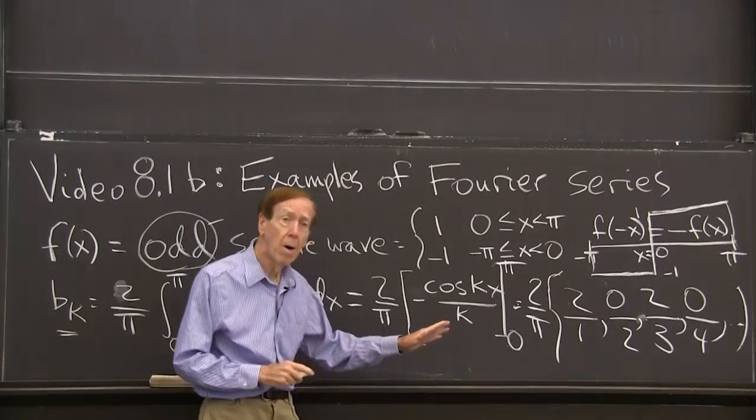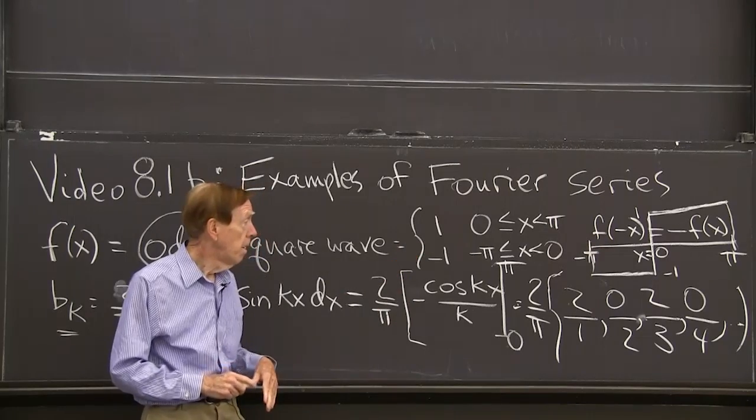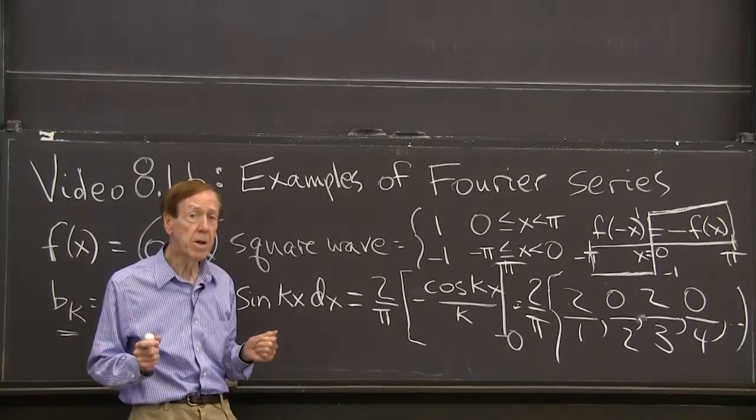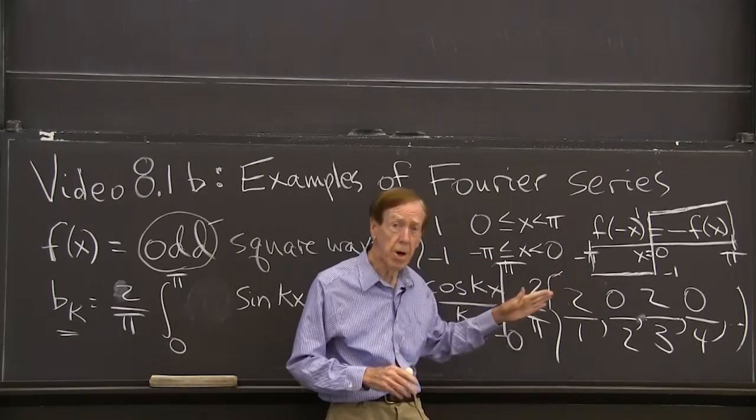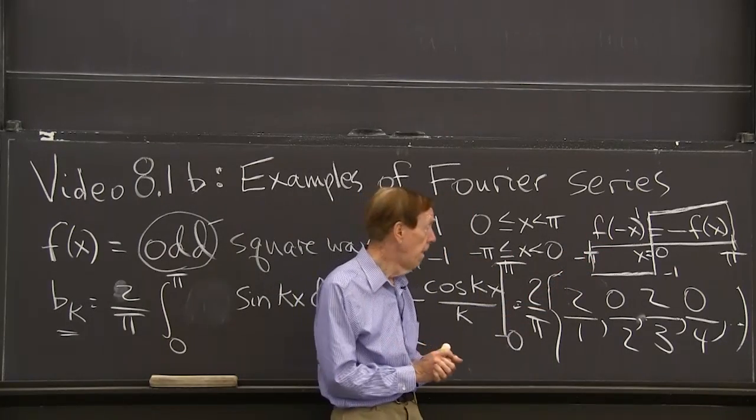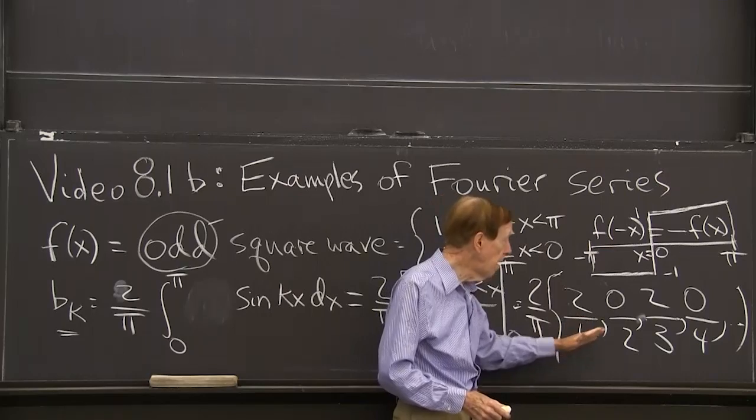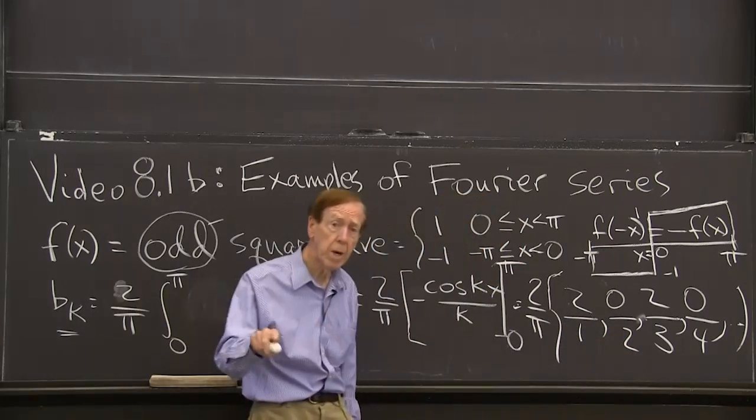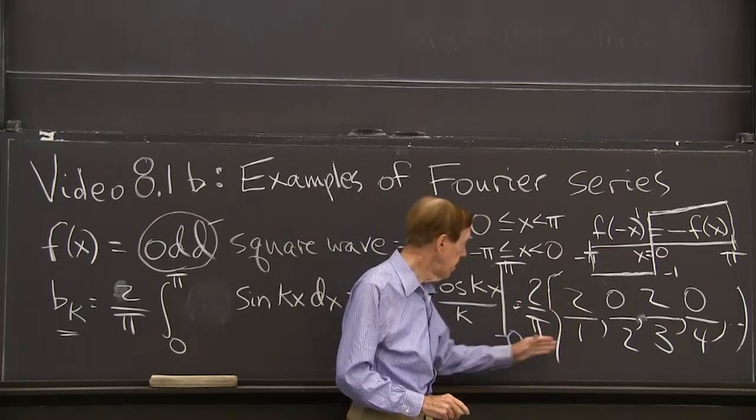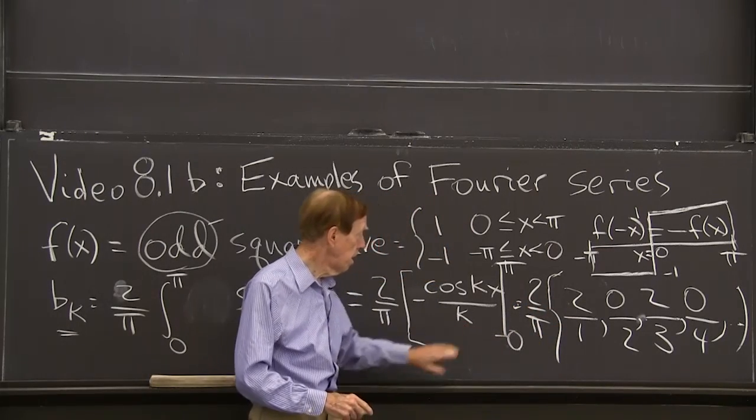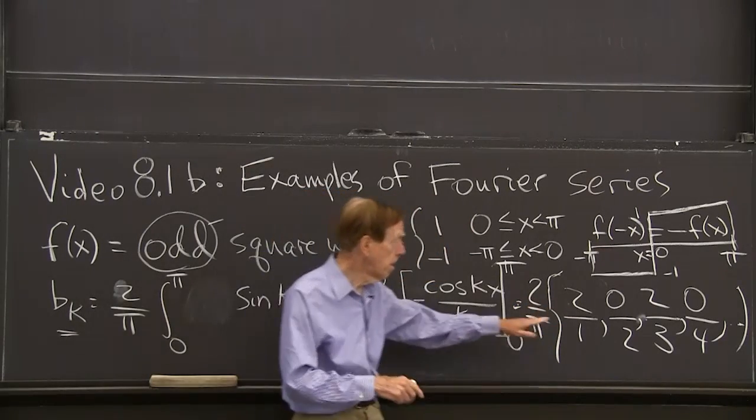So I see that now for this function, which is better than the delta function, although it's not very smooth, it has jumps. It's a jump function, a step function. I see some decay, some slow decay in the Fourier coefficients. This factor k is growing,